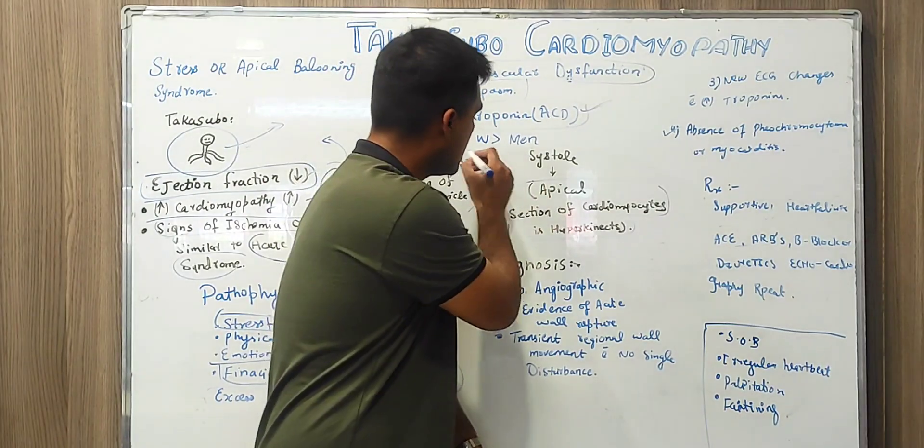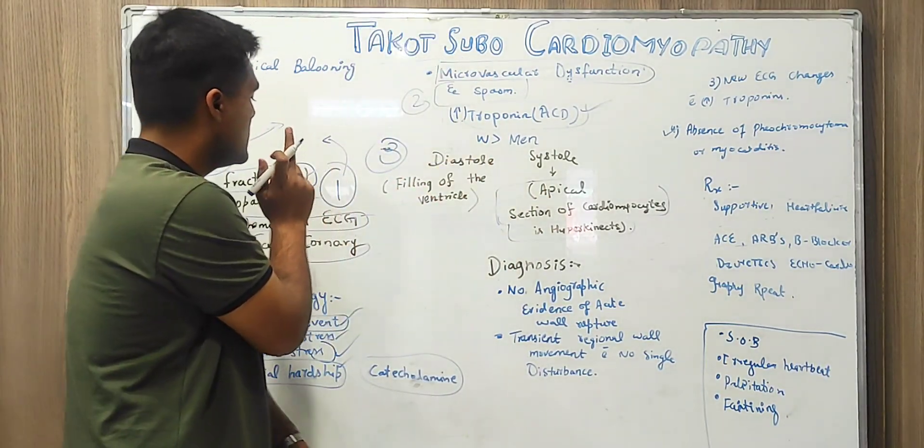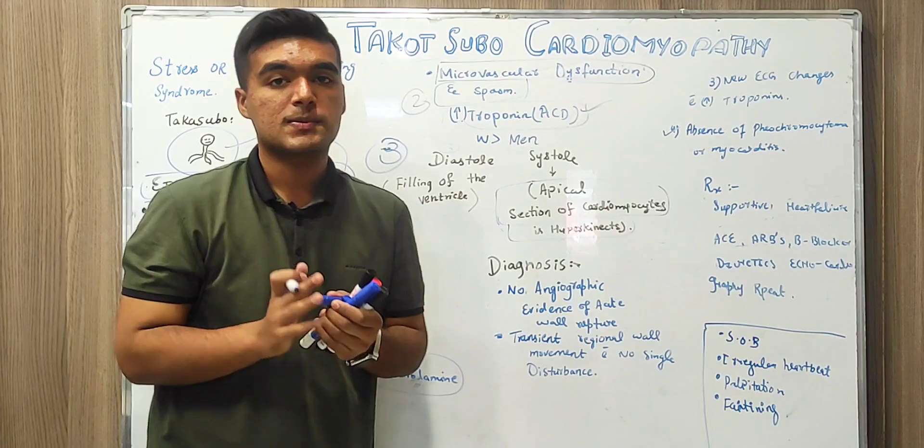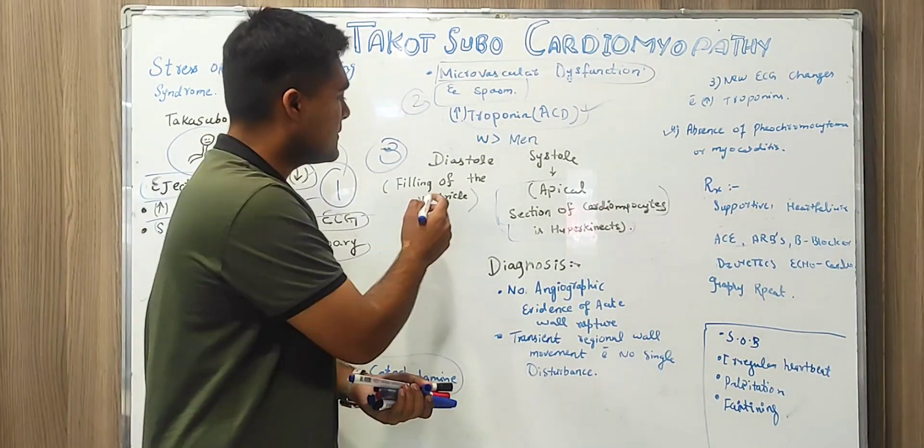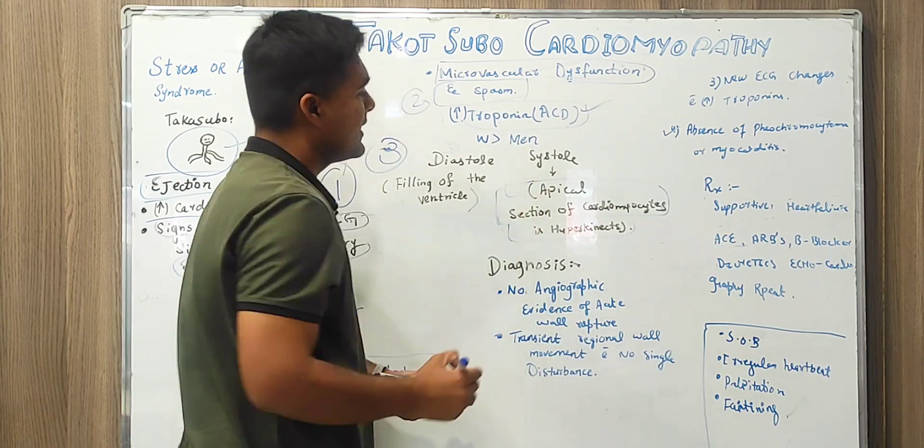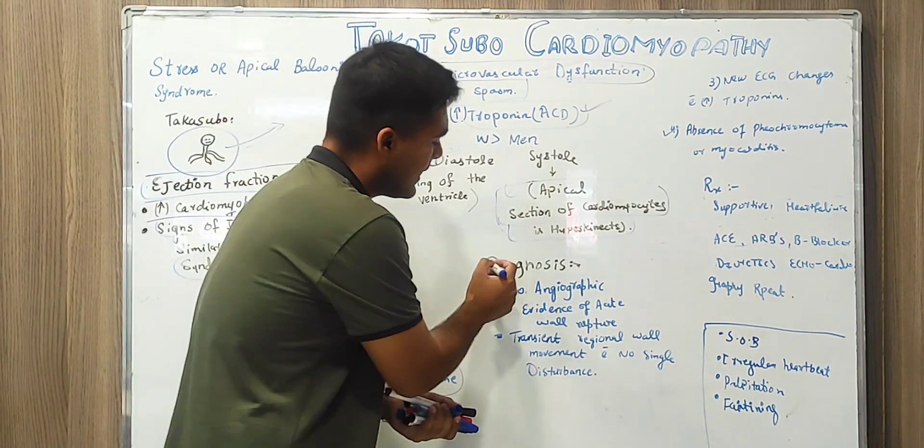So it is the third important point after those MI changes, ejection fraction, after microvascular dysfunction, troponin increase. Due to that troponin increase, we have contraction. And after that, we have systole hyperkinetics.